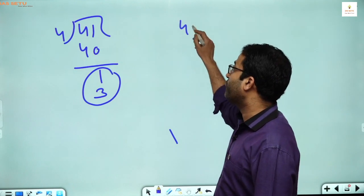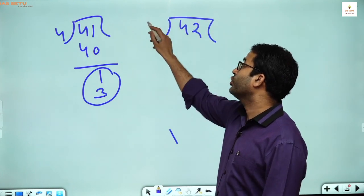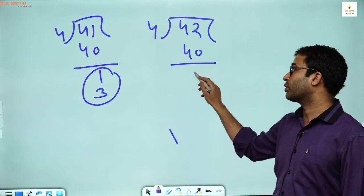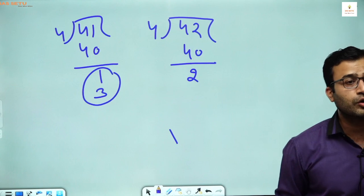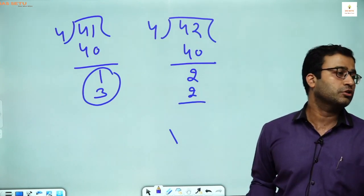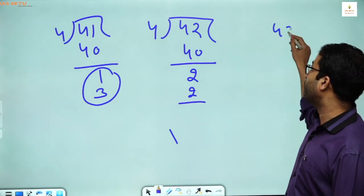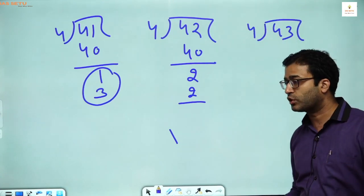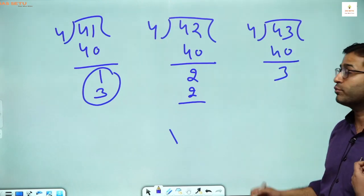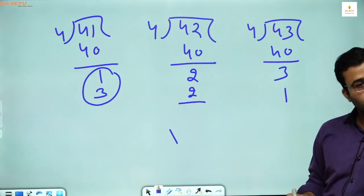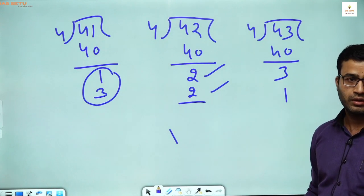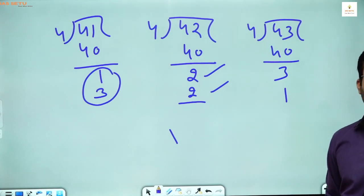If you have 42 chocolates, distributing 4 per head — after giving 40 you have 2 extra chocolates. But according to me, you have 2 less: 2 plus 2 becomes 4 and you can give that 4 to someone. Similarly if you have 43 chocolates, distributing 4 per head — after 40, you have 3 extra according to you, but according to me it is 1 less. School days we only saw the extra part; now we will see the less part also.